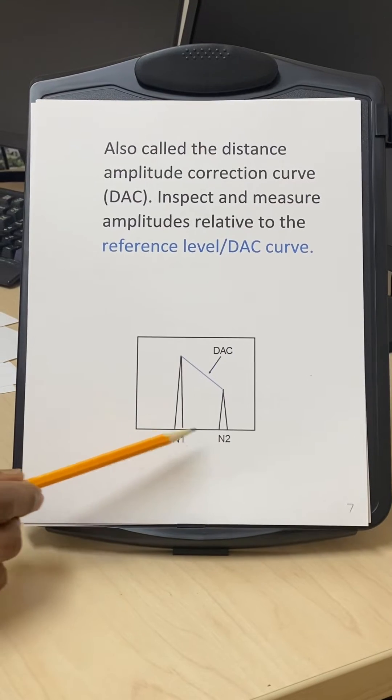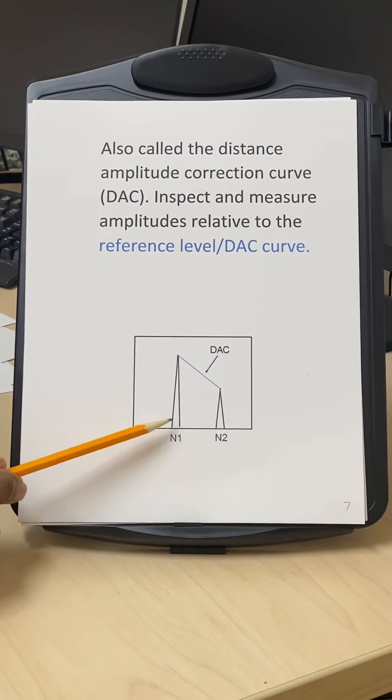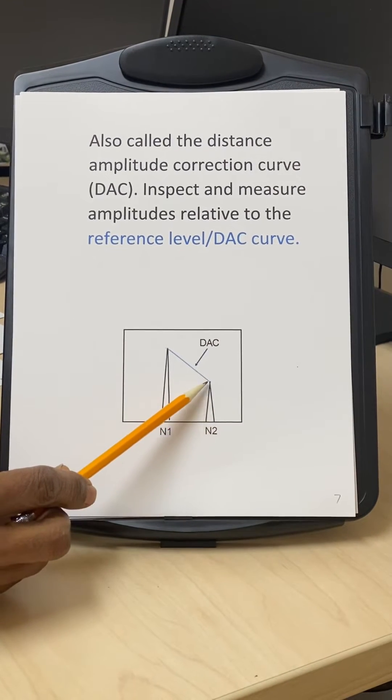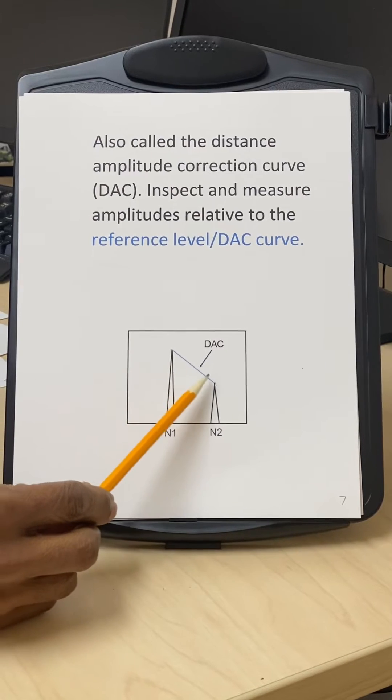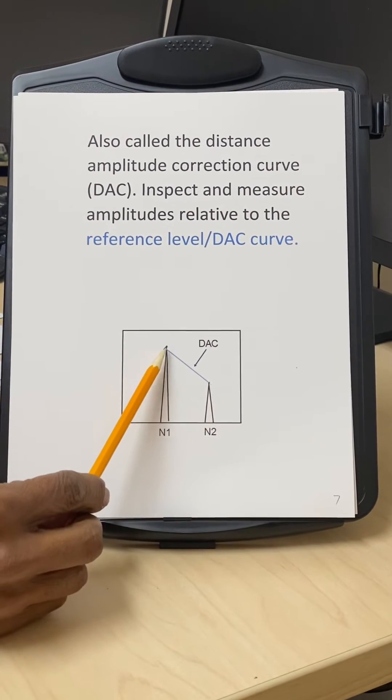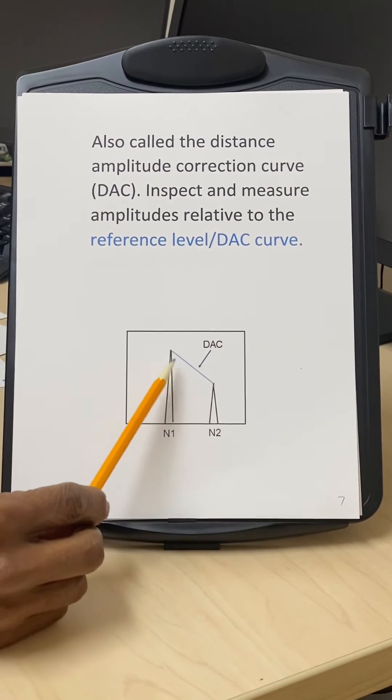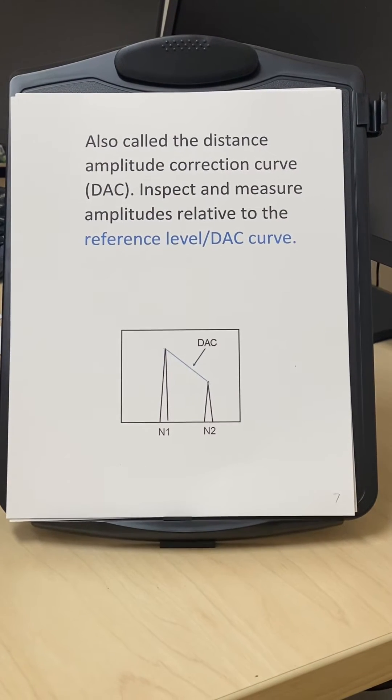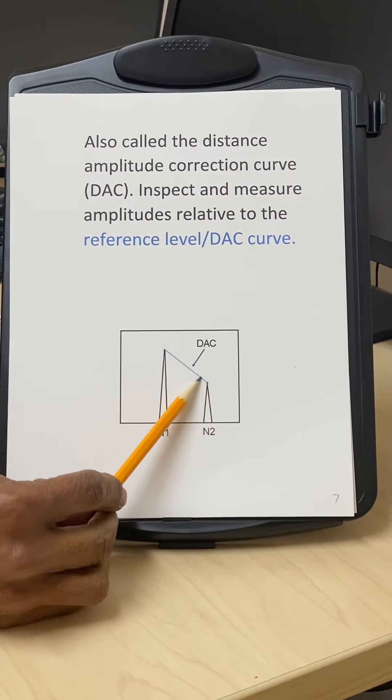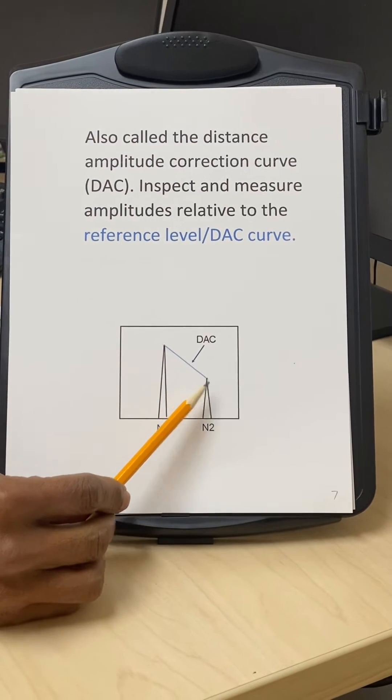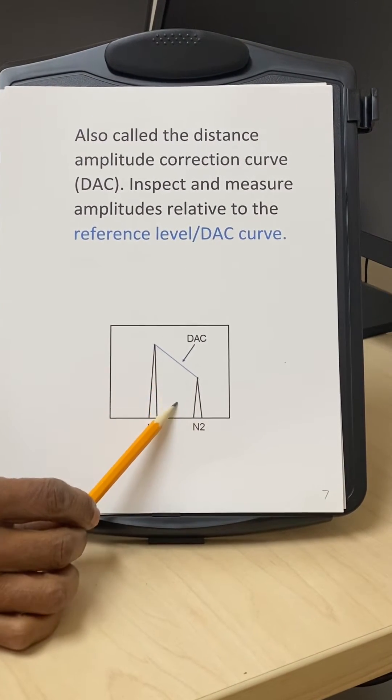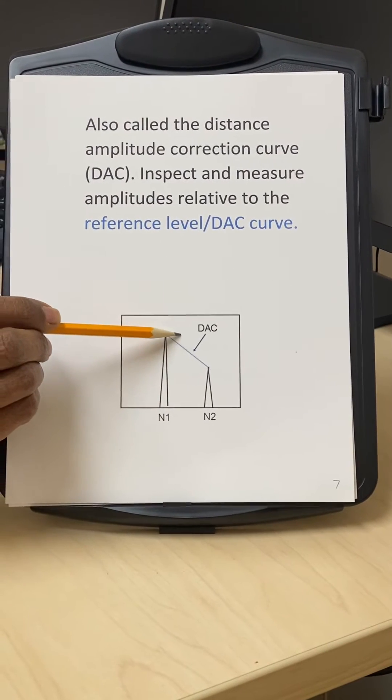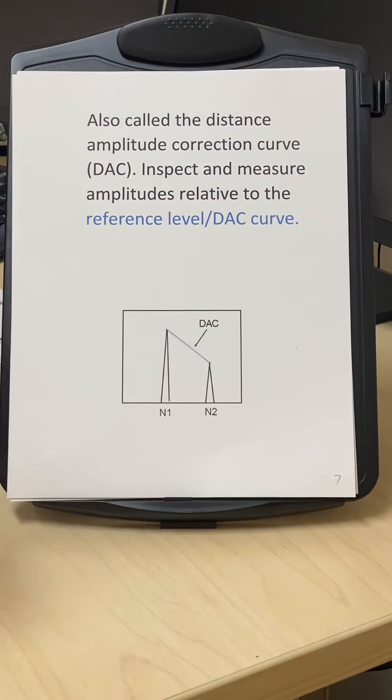As you can see, this is the signal from notch N1, the ID notch, and this is the signal from notch N2, which is the OD notch. Typically what we do is we set the gain so that this signal is about 80%, then we get the amplitude from notch N2. We connect the dots and this becomes our DAC curve or distance amplitude correction curve. This line now is our reference level. If there is a discontinuity below this level, that will not be rejected. If it is above the reference level, then it will be rejected based on the length.